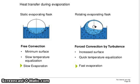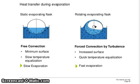Heat transfer during evaporation — static evaporating flask versus rotating flask. With a static flask, free convection occurs with minimum surface area and slow temperature equalization, resulting in slow evaporation. With a rotating flask, forced convection by turbulence gives increased surface area, quick temperature equalization, and fast evaporation.